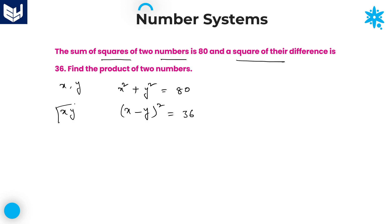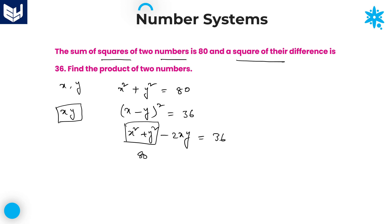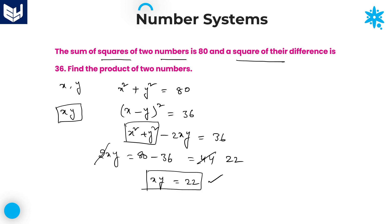The question asks for the product of the two numbers, x times y. As we all know, (x minus y) squared equals x squared plus y squared minus 2xy, which equals 36. Since x squared plus y squared is given as 80, we get 80 minus 2xy equals 36. Moving 2xy to the right side, 2xy equals 80 minus 36 equals 44. Dividing by 2, x times y equals 22. That is the required answer.